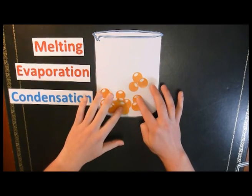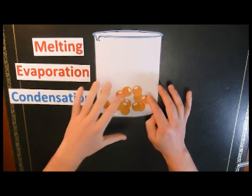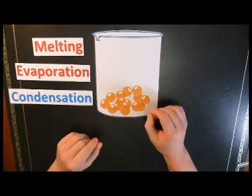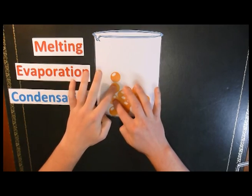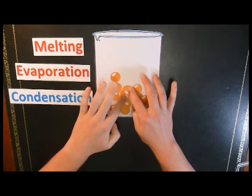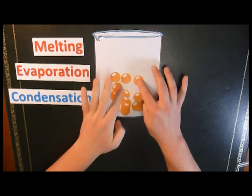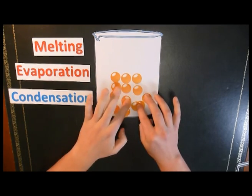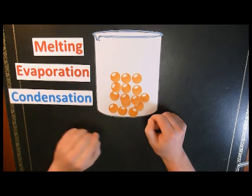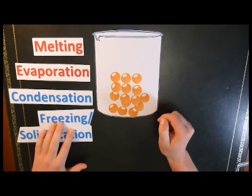If we continue to cool this down, if we put it in the freezer or something, they actually start to form back into a solid because they're losing so much energy that they're starting to get strongly attracted to each other and they're starting to freeze together into a fixed position. We say this process is freezing or solidification, which means forming a solid.